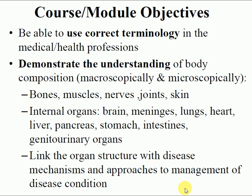Students should also understand internal organs such as the brain, lungs, heart, liver, pancreas, stomach, intestine, and genitourinary organs. You should know how to link organ structure with disease mechanisms and approaches to management. The major importance of anatomy in the medical field is that we study the arrangement and composition of body organs, then link that knowledge to clinical conditions and disease management.